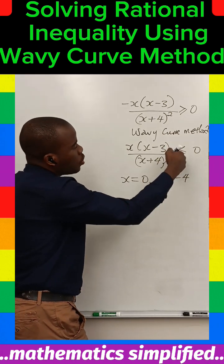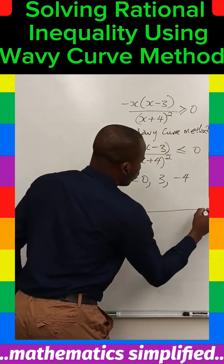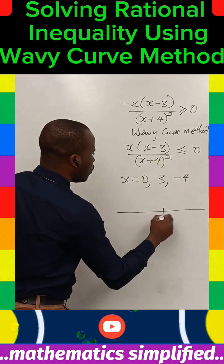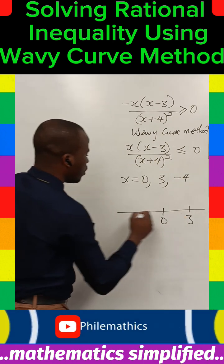But you know that we cannot include the point minus four because it would be undefined. If we draw the number line, if here is zero, here is three, here is minus four.